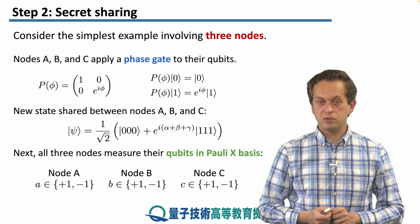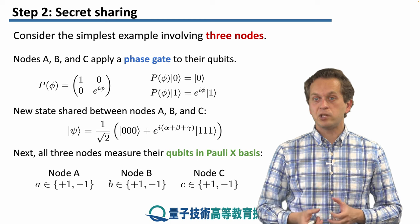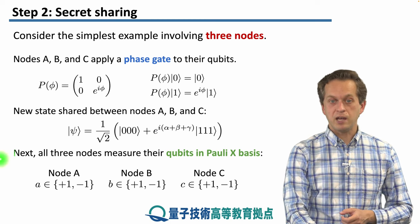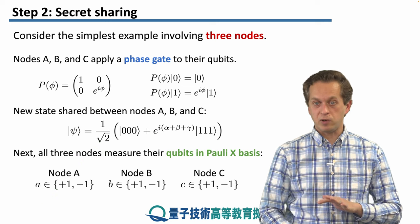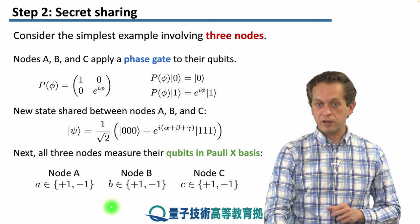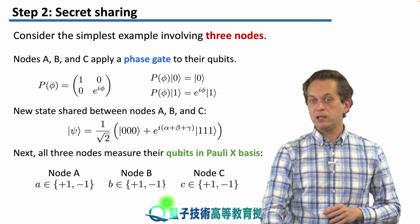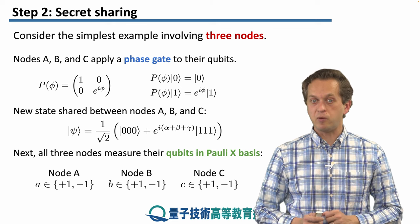Then what the nodes do, they measure their qubit in the Pauli x basis. And this generates classical outcomes or classical bits. So node A will have a classical outcome a, which is either +1 or -1. Node B will also have a classical outcome b, +1 or -1. And node C's outcome is denoted by small c, which is again +1 or -1.